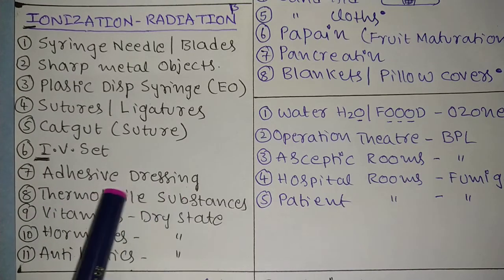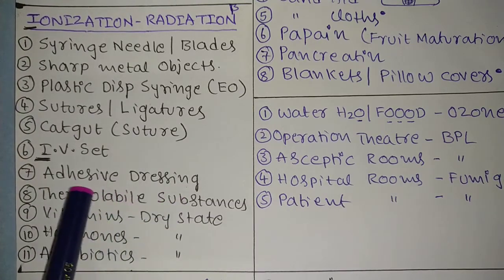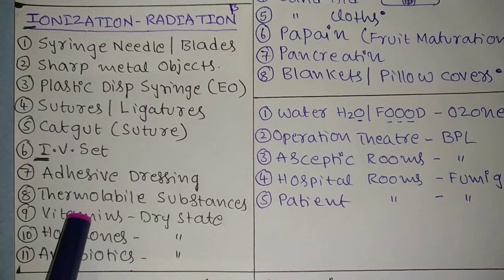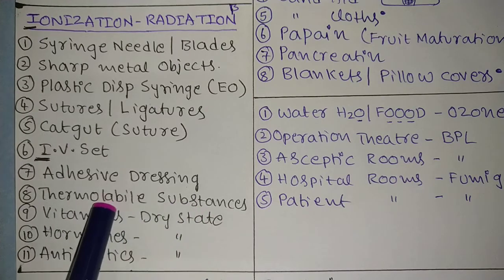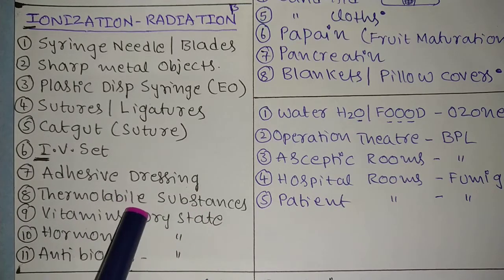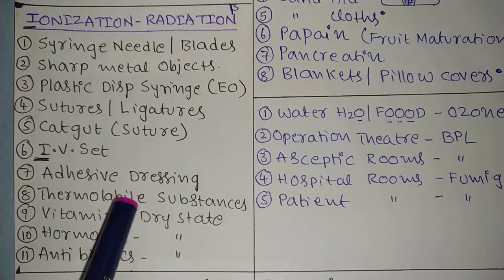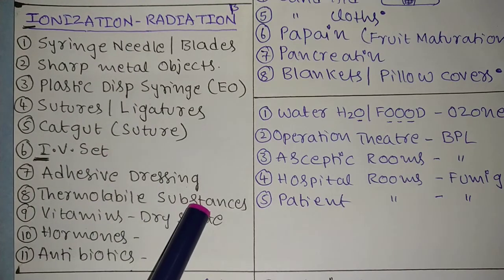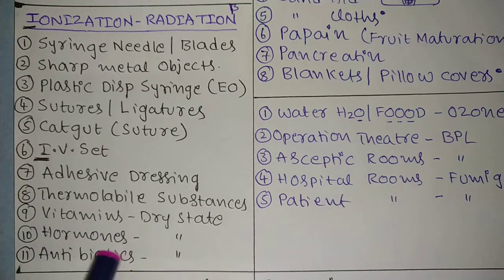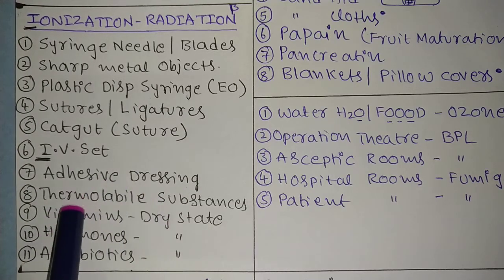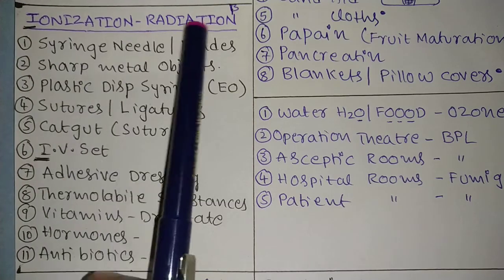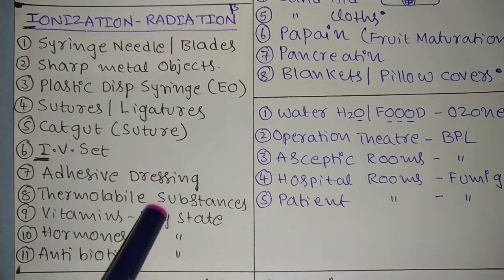Adhesive dressings (sticking plasters — not bandaids) also use ionizing radiation. Thermolabile substances — those very sensitive to heat, like vitamins, hormones, and antibiotics — must not have heat applied for sterilization. Use ionizing radiation only for thermolabile substances.